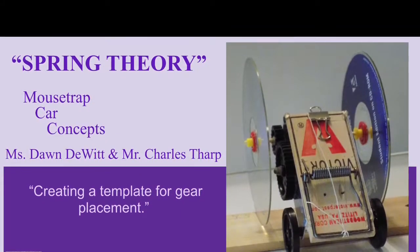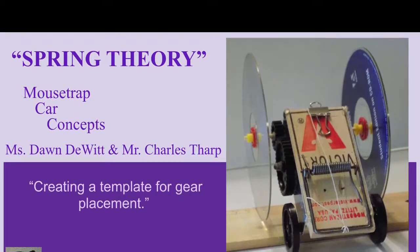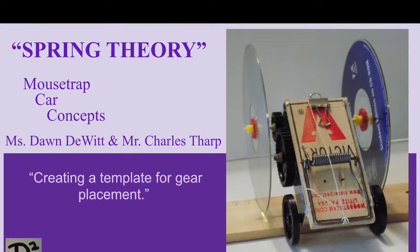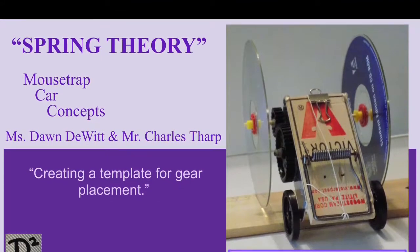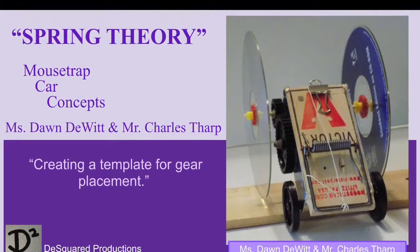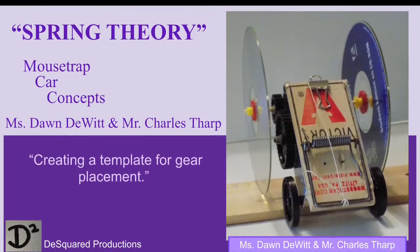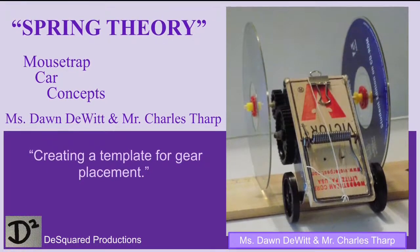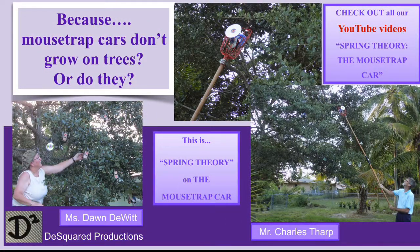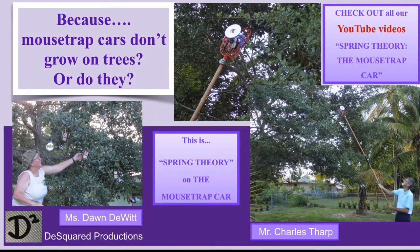In this spring theory lesson, the mousetrap car on creating a template for gear placement, we have shown you how to determine the optimum distance between gears in a pair through a process of trial and error. This is how to work like an engineer. Be deliberate with your measurements and methods because it matters. Gear placement and use of multiple gear pairs and arrangement of components will be discussed in another lesson.